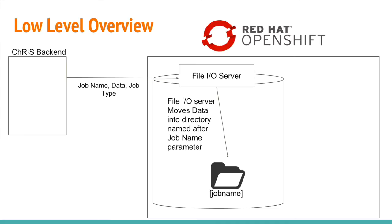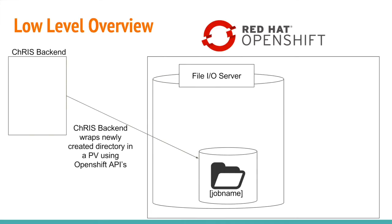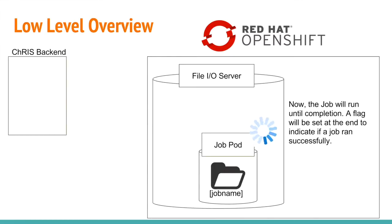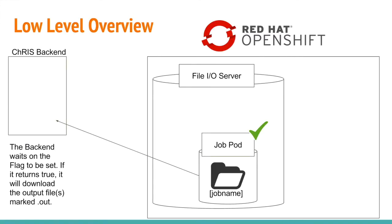The randomized job names ensure that no two directories share the same name to avoid problems. The backend then wraps the newly created job name directory in a persistent volume, which allows us to mount containers on that directory. The backend then creates a job template with OpenShift API calls, which specifies which pod to run and mounts that pod on the persistent volume that was just created. Once the pod gets mounted onto the persistent volume, OpenShift automatically runs the pods based on what is specified in the job template. OpenShift keeps a flag that marks the job as either running or completed, and our backend script waits on this flag until it gets marked completed.